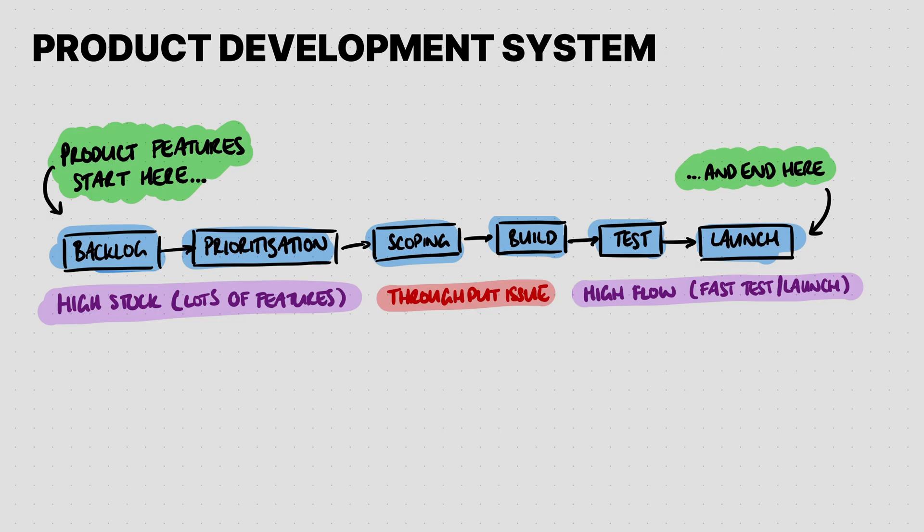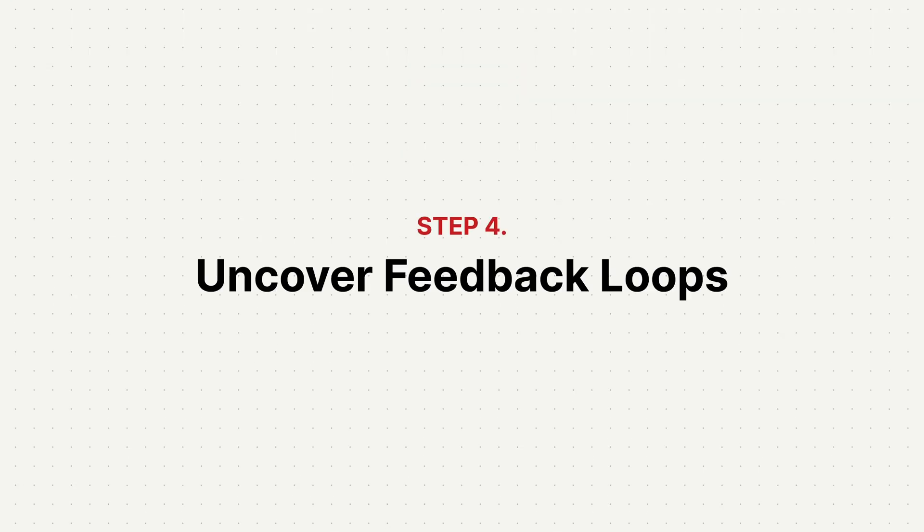Once we've identified that bottleneck, we need to flip our lens and look for leverage points — places where a small change in our system has a disproportionate impact. In our product development system, knowing what we know about the bottleneck, we're trying to identify which stage gives us the biggest benefit for the least amount of work. Spending a couple of additional days writing more detailed feature requirements can save us weeks of unnecessary rework, and would likely have much more impact than adding developers, since development time isn't actually the bottleneck. The lesson: don't just throw resources at the problem — identify where the best bang for your buck is.